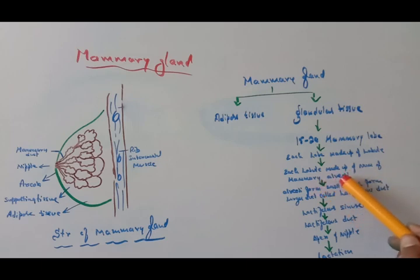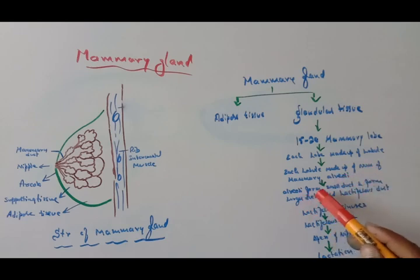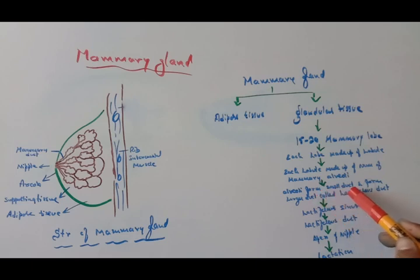The cells of the alveoli is a region where the milk is produced with the help of a hormone called prolactin. Prolactin hormone helps alveoli cells produce milk. Later, these alveoli form smaller ducts and they form larger ducts.